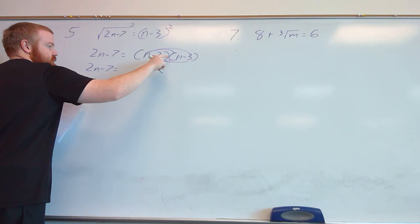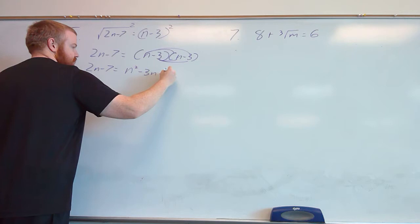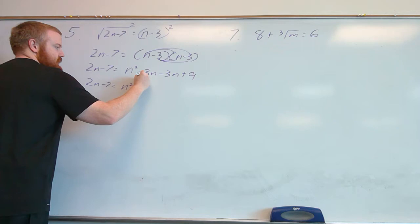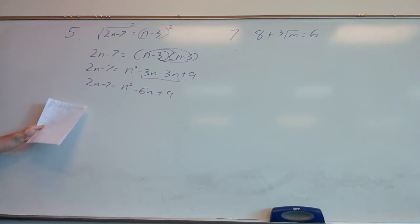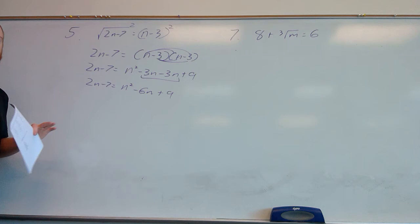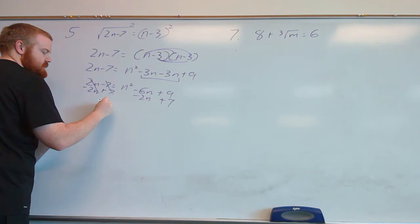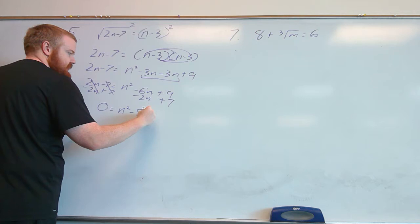Distributing: n times n gives n squared, then negative 3n, minus another 3n, and negative 3 times negative 3 is 9. Combining like terms gives us n squared minus 6n plus 9. We need everything on the same side since we have n squared, an n term, and a constant, so we subtract the 2n and add the 7. That gives us n squared minus 8n plus 16.